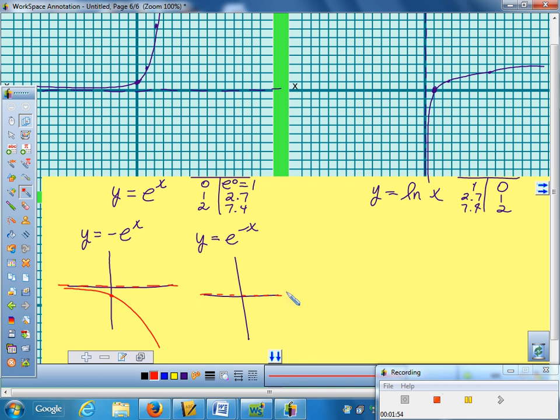it flips it over the y-axis. So in this case, it would still be crossing at (0, 1), but it's going to actually be what we call exponential decay. It's going to come down. Okay, logs, for some reason, seem to have more issue.